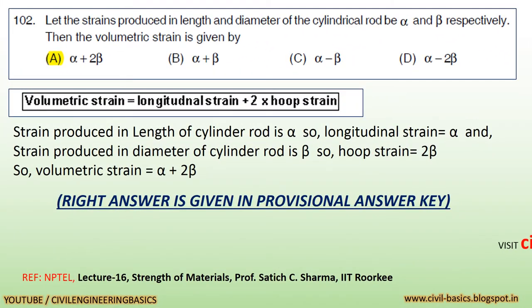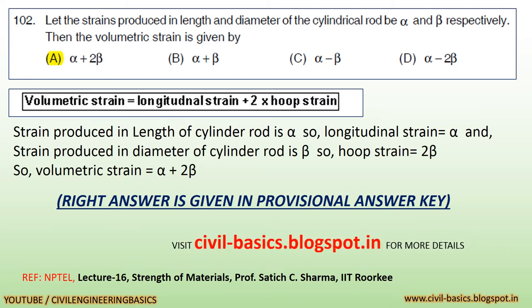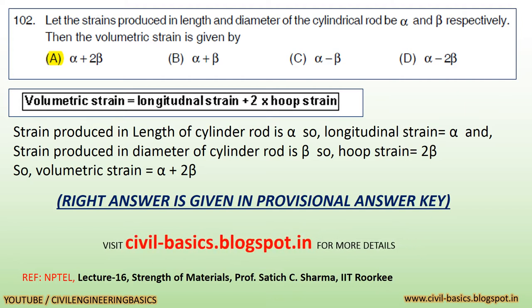Question: Let the strains produced in length and diameter of a cylindrical rod be alpha and beta respectively. Then the volumetric strain is given by: a) alpha plus 2 times beta, b) alpha plus beta, c) alpha minus beta, d) alpha minus 2 times beta. Let's see the details. Volumetric strain equals longitudinal strain plus 2 times beta. Strain produced in length of the cylindrical rod is alpha and strain produced in diameter of the cylindrical rod is beta.